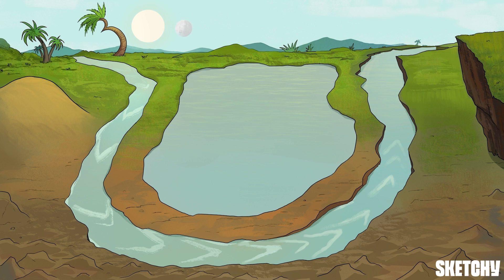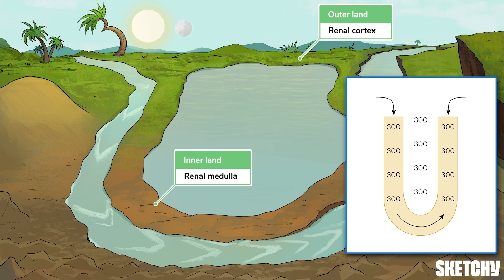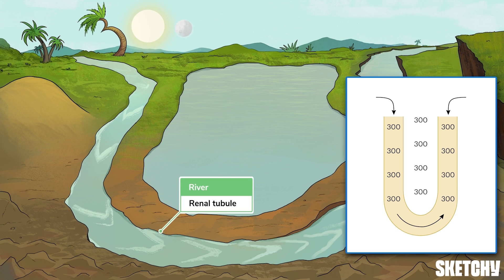Before we embark on this adventure, let's orient ourselves to the scene. Think of the kidney as a multi-layered organ with an outer cortex and an inner medulla, which tapers off into the papilla — that's the spot where urine is collected. The workhorse of the kidney is the nephron, or renal tubule, a system of winding tubes that filter the blood and make urine.